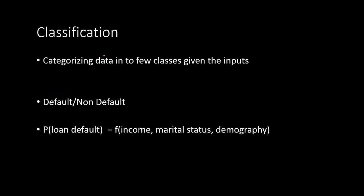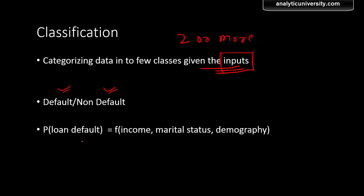Classification is a problem where you categorize data into two or more classes given certain attributes or features about the data. Your task is to classify into two or more categories. An example could be classifying customers into default or non-default types. A bank lending out loans has to predict whether customers are going to default on the loan or not, given their income, marital status, or demographics.